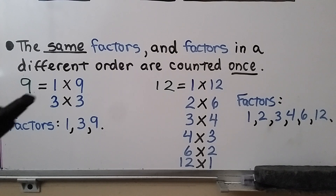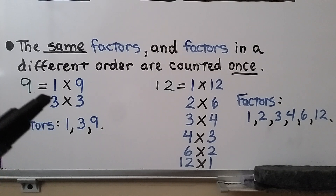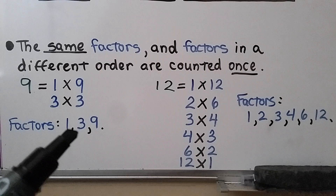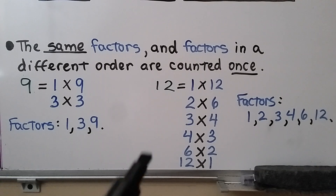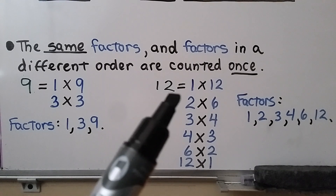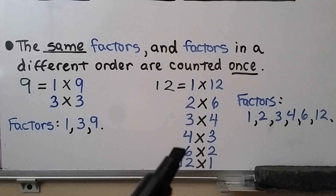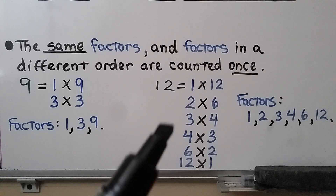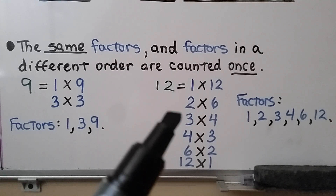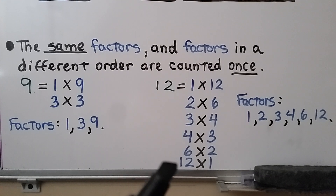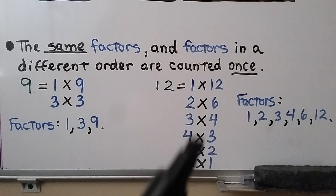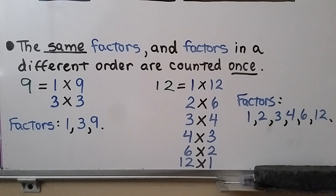For example, the factors of 9: we have 1 times 9 and 3 times 3, but we only count one of those 3s. So the factors are 1, 3, and 9. For 12, we have 1 times 12, 2 times 6, 3 times 4 — and even if we flip them around to 4 times 3, 6 times 2, and 12 times 1, the factors of 12 are only 1, 2, 3, 4, 6, and 12. Even if they're in a different order, we only count them once.